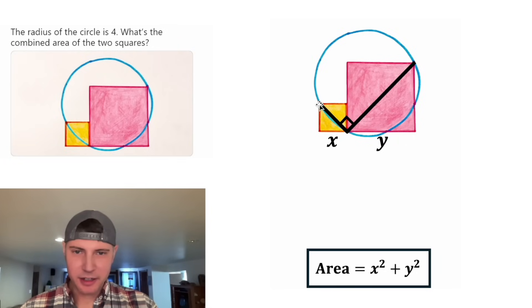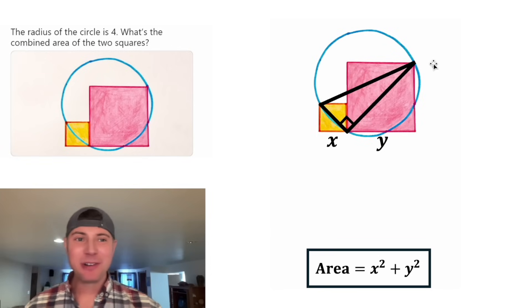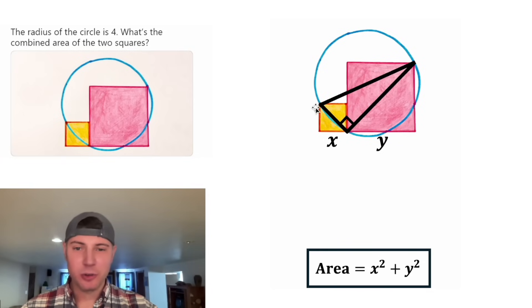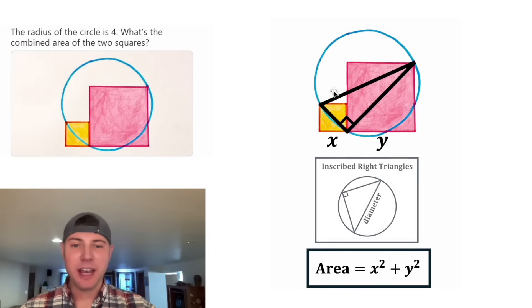Next, let's complete this right triangle by connecting from here to here. Now something really cool is going on. We have an inscribed angle that's 90 degrees. Anytime a circle has an inscribed right triangle, it will always stand on the diameter. Here's some notes right here. So this is the diameter of this circle. And we were told the radius of the circle is four, which means the diameter would be equal to eight.